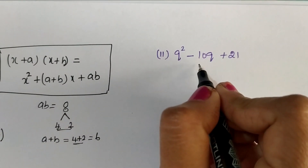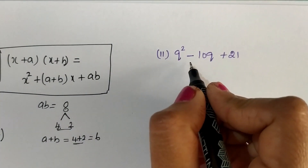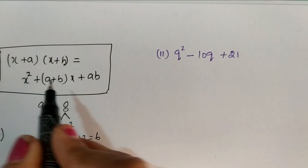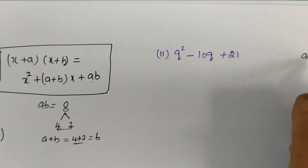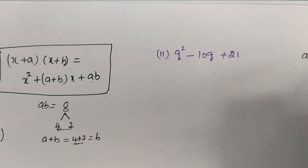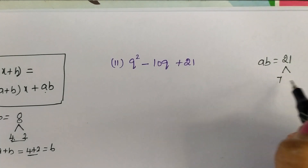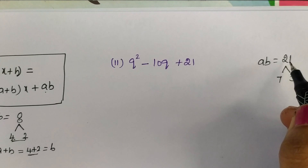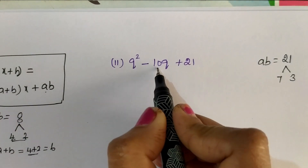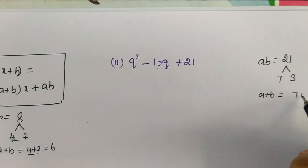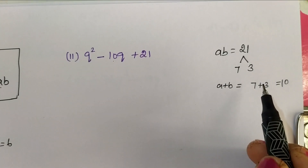Second question: Q square minus 10q plus 21. Here again 21 is not a perfect square, so we can use this identity. Here AB equal to 21. When you multiply A and B we should get 21. So we can use 7 and 3. 7 threes are 21. When you add 7 and 3, we should get 10. 7 plus 3 equals 10.